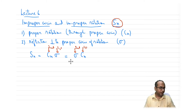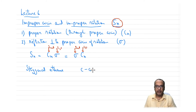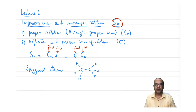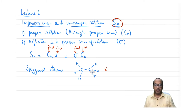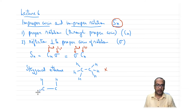Let us see with an example how this improper axis can be understood. We will look at staggered ethane. In a symmetry class, you would never draw a molecule simply as C-C-H-H-H-H because it does not tell you the orientation of each hydrogen. A better representation is the Newman projection.